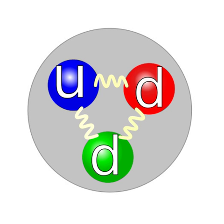The nucleus of the most common isotope of the hydrogen atom, with the chemical symbol 1H, is a lone proton. The nuclei of the heavy hydrogen isotopes deuterium and tritium contain one proton bound to one and two neutrons, respectively.